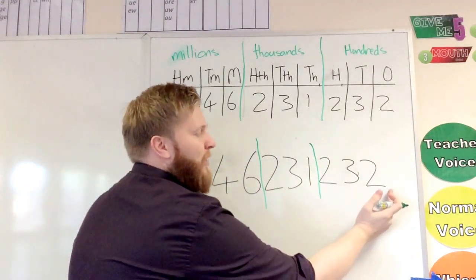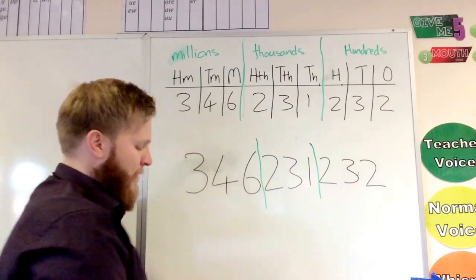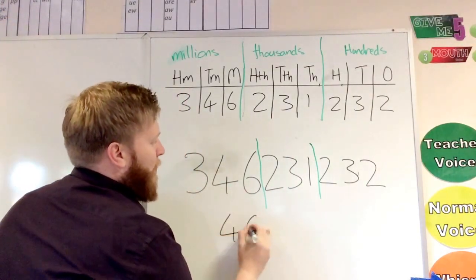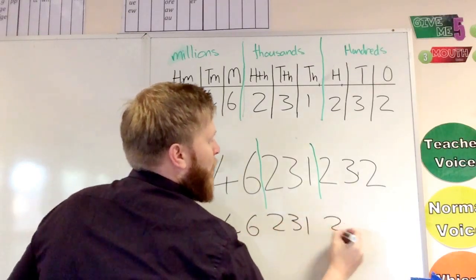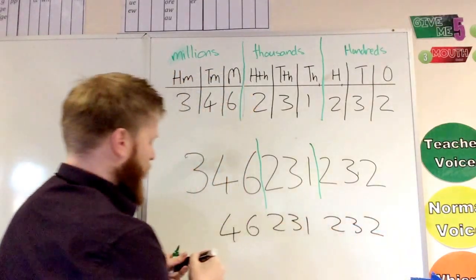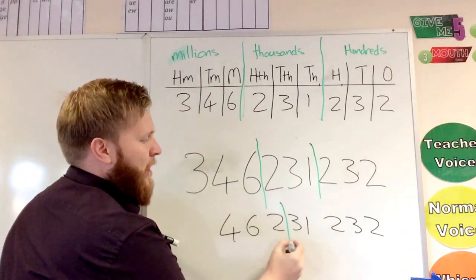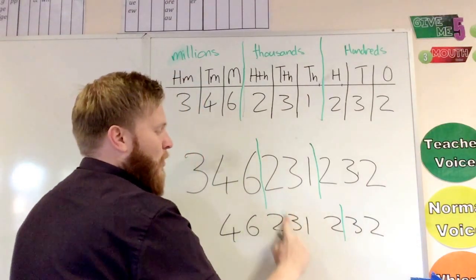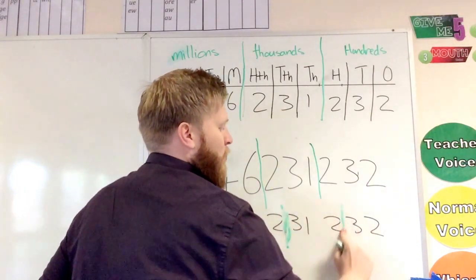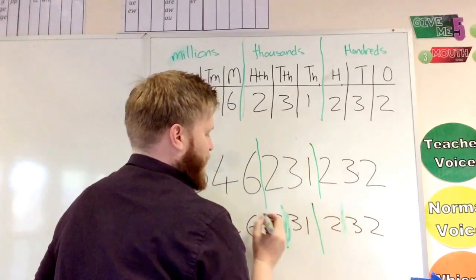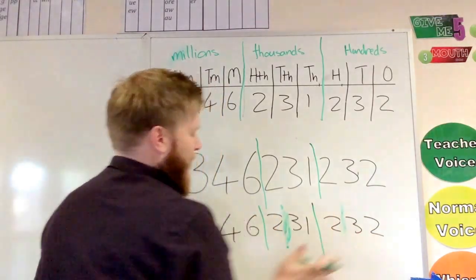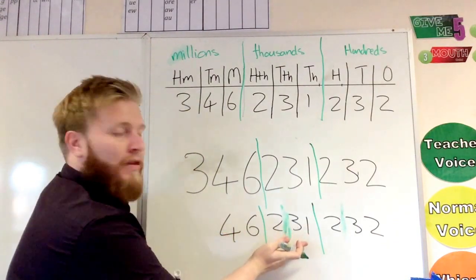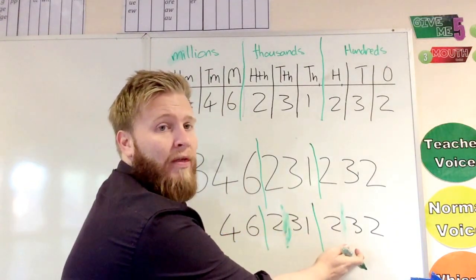Now always when you're doing your threes, work from this way, because if you're working from that way, if you had a number like this, let's just take the 300 million off the front. If you've broken into three from this way, it wouldn't work because you wouldn't have three on the end, so you'd have to work this way. In that case, it's easier because I want a two digit number there: 46,231,232.